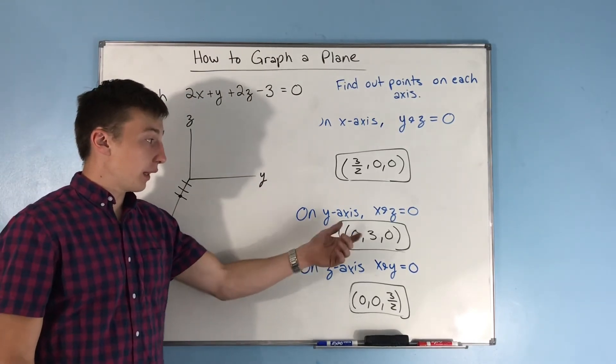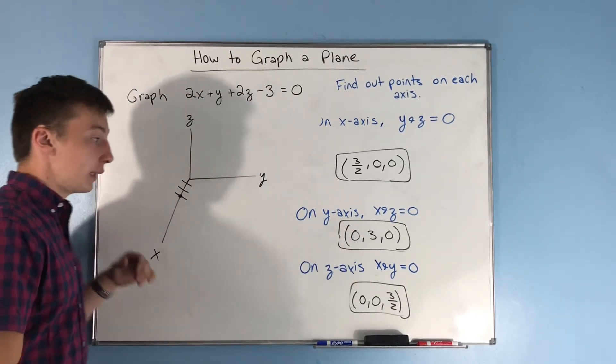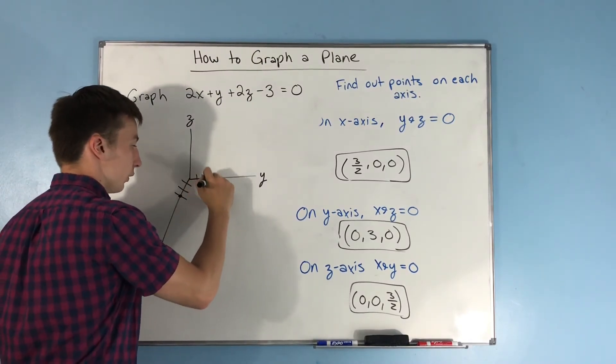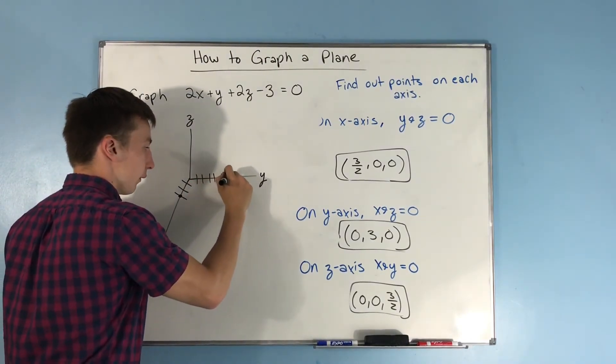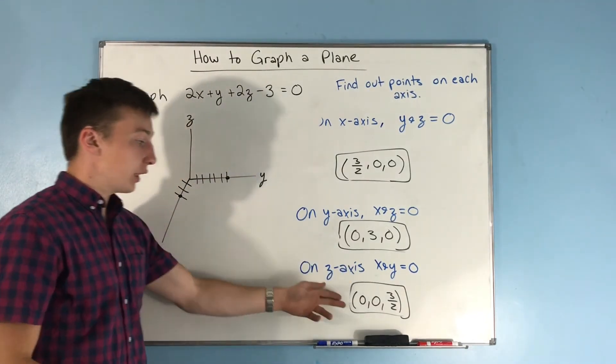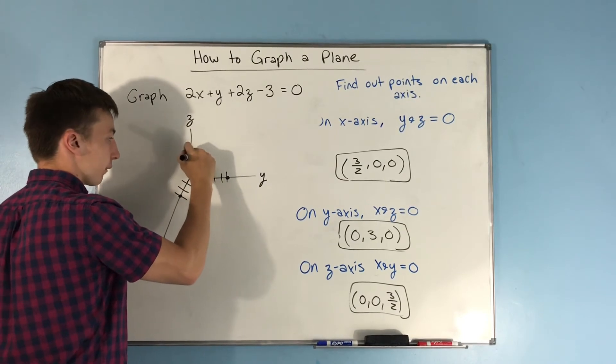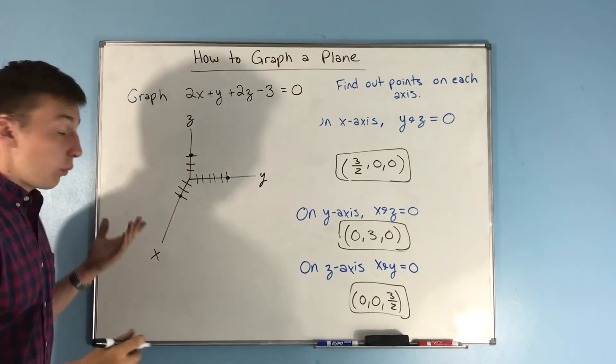Now for the y-axis, we know that x and z are 0, we get the point (0, 3, 0). So that's going to be 6 ticks: 1, 2, 3, 4, 5, 6. And then on the z-axis, x and y are 0, we get the point (0, 0, 3/2). So 1, 2, 3. And now we get our plane.